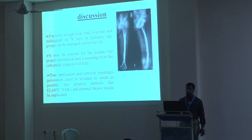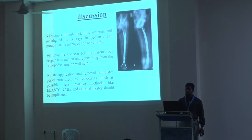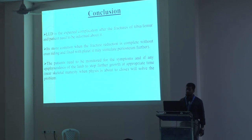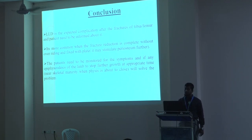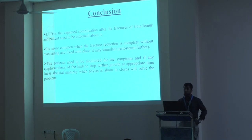Fracture with overriding and malunion on x-rays in the pediatric age group can be managed conservatively. It may be a concern for parents, but proper consultation with an orthopedic surgeon will help. Late application and removal of the splint and periosteum stripping should be avoided. Elastic nails and external fixators are indicated from this study. LLD is an expected complication after fracture of the tibia and femur, and the patient needs to be informed about it. It is more common when the fracture heals completely without overriding and is fixed with a plate. The patient needs to be monitored, and if symptomatic, epiphysiodesis of the longer limb can be performed at the appropriate time near skeletal maturity when the physis is about to close.